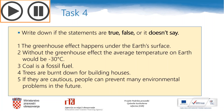Here is a comprehension task about the text you have just heard. I will read the sentences. Please write down in your notebooks if the sentences are true, false, or if it doesn't say. 1. The greenhouse effect happens under the Earth's surface. 2. Without the greenhouse effect, the average temperature on Earth would be minus 30 degrees Celsius. 3. Coal is a fossil fuel. 4. Trees are burnt down for building houses. 5. If they are cautious, people can prevent many environmental problems in the future.